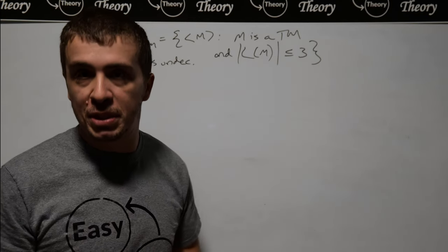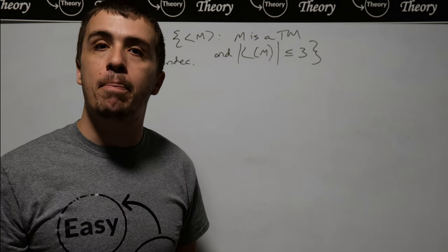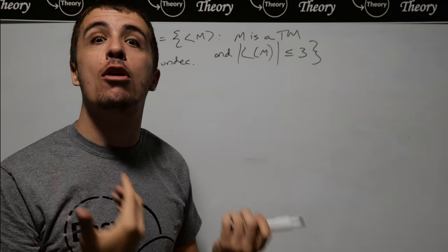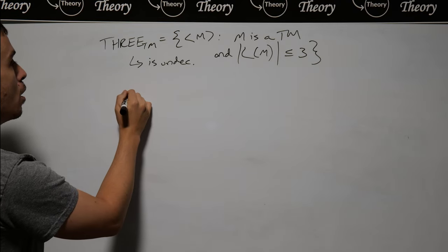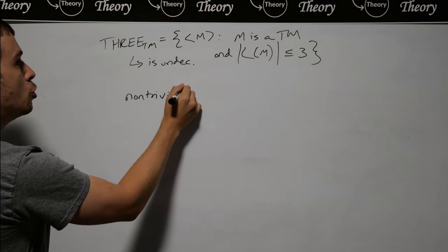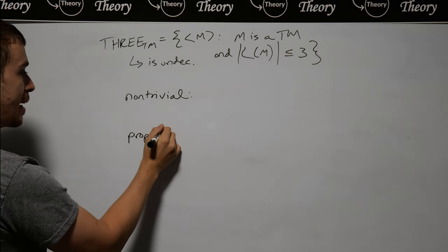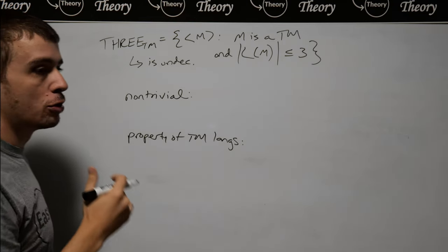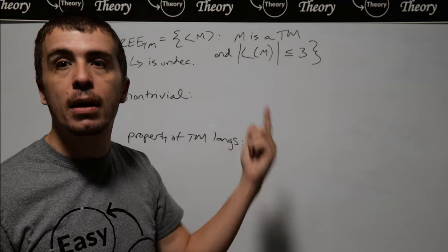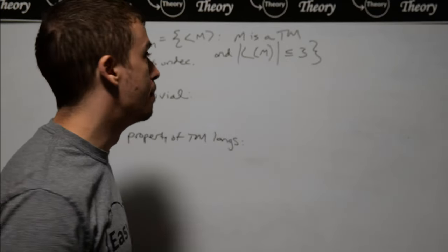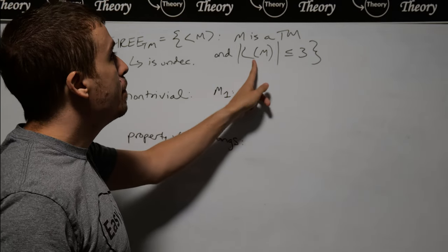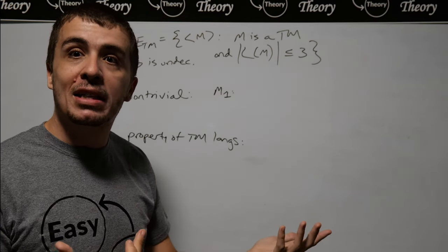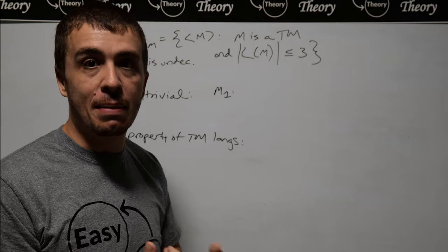To apply Rice's theorem, we need to show this is a non-trivial property of Turing machine languages. To show it's non-trivial, we need a Turing machine that's in 3TM and another that is not. How do we get a machine that's in there? We need a machine that accepts at most three strings. Think of the example of accepting zero strings — namely rejecting everything. If I have a machine that rejects every string, making the start state the reject state, it accepts zero strings. Zero is less than or equal to three.